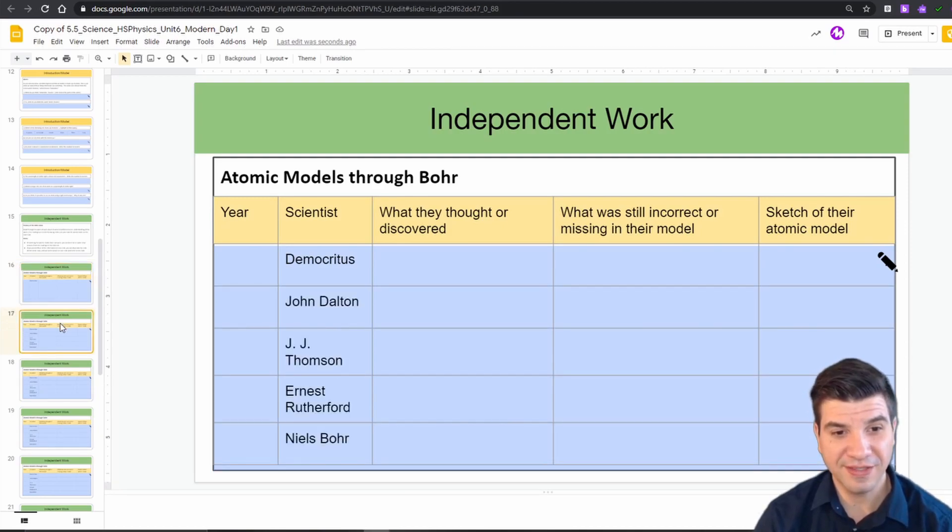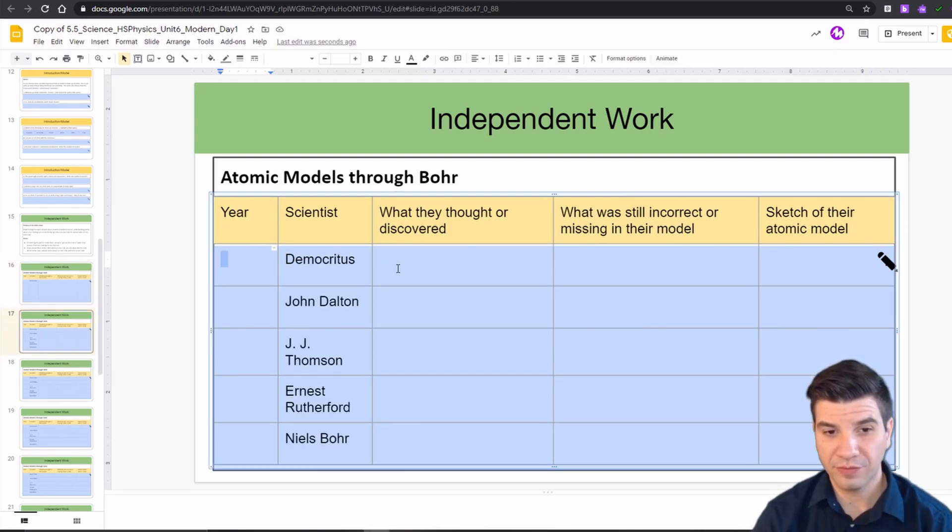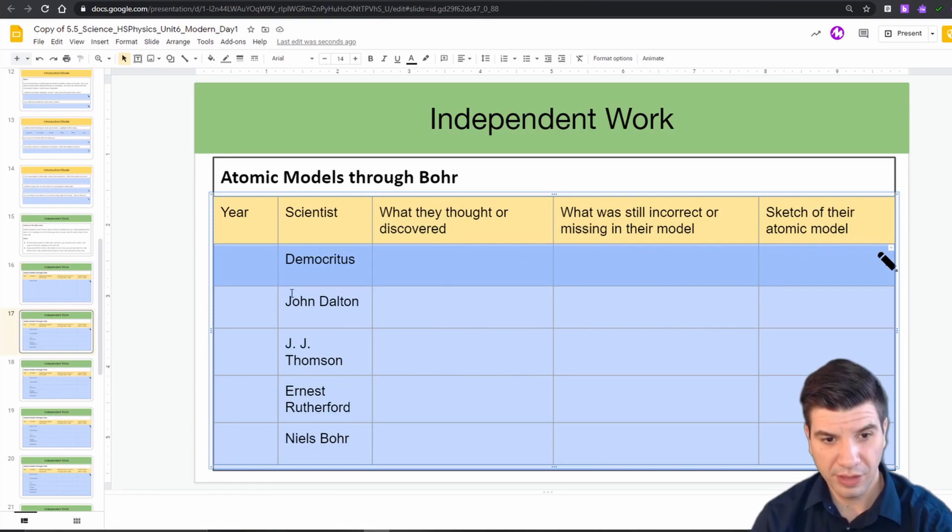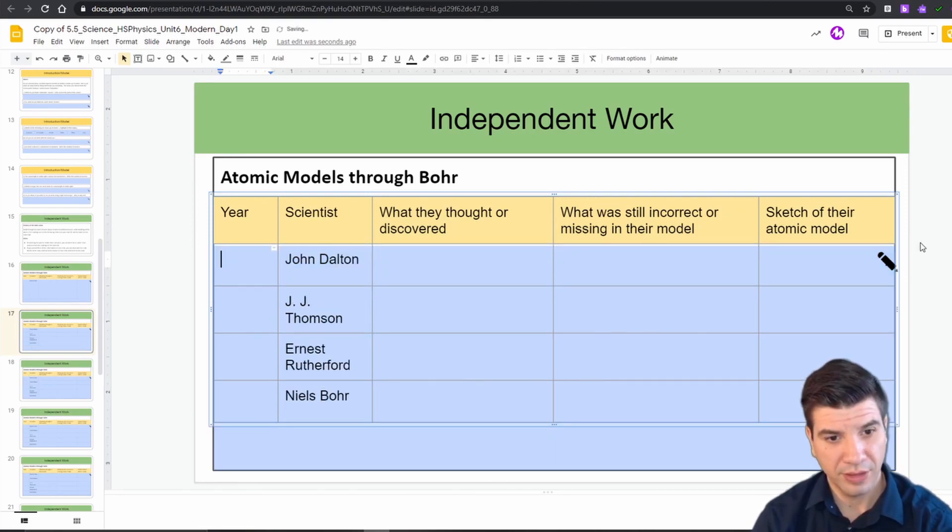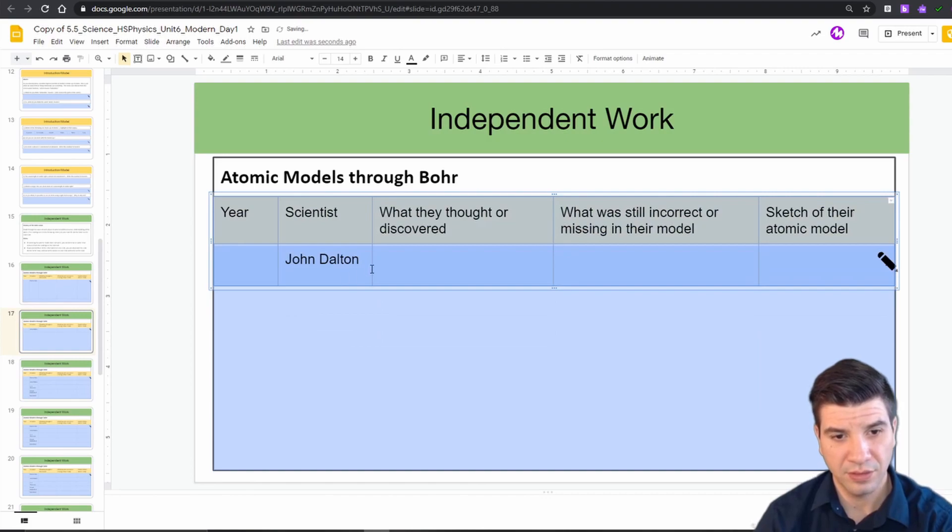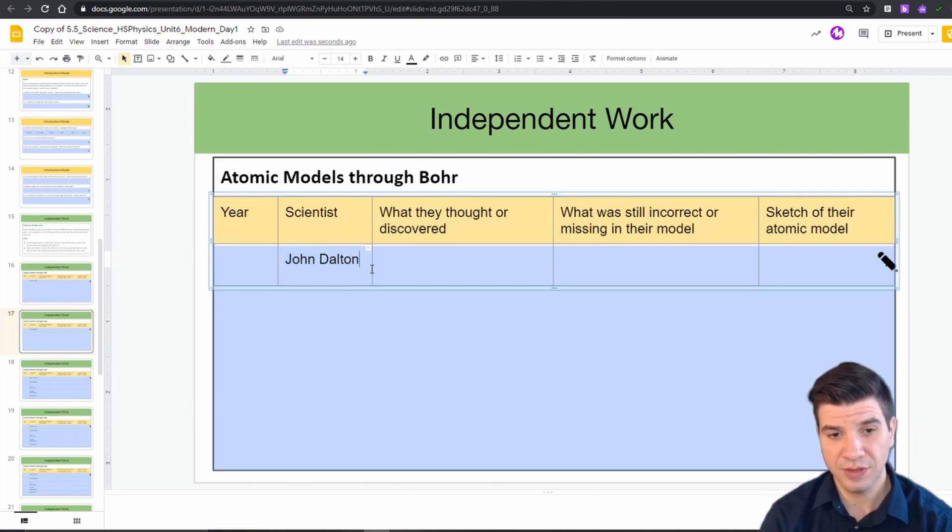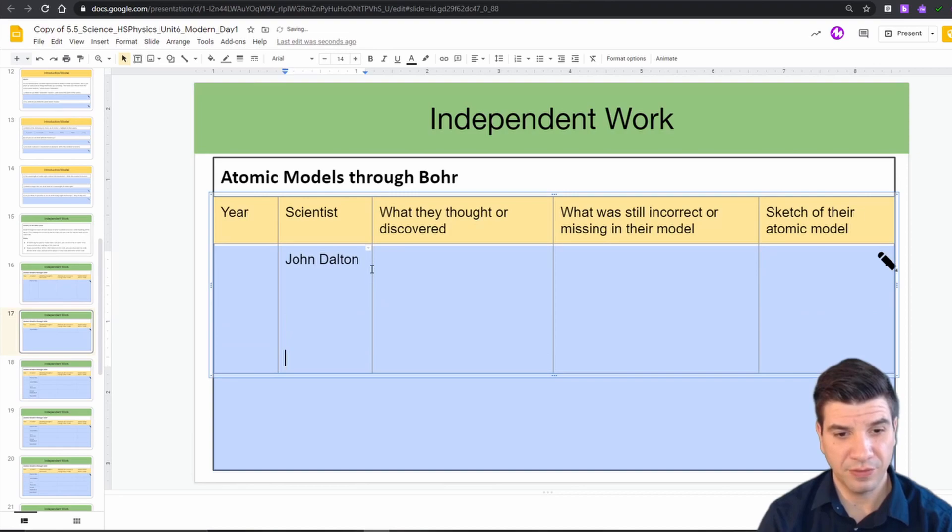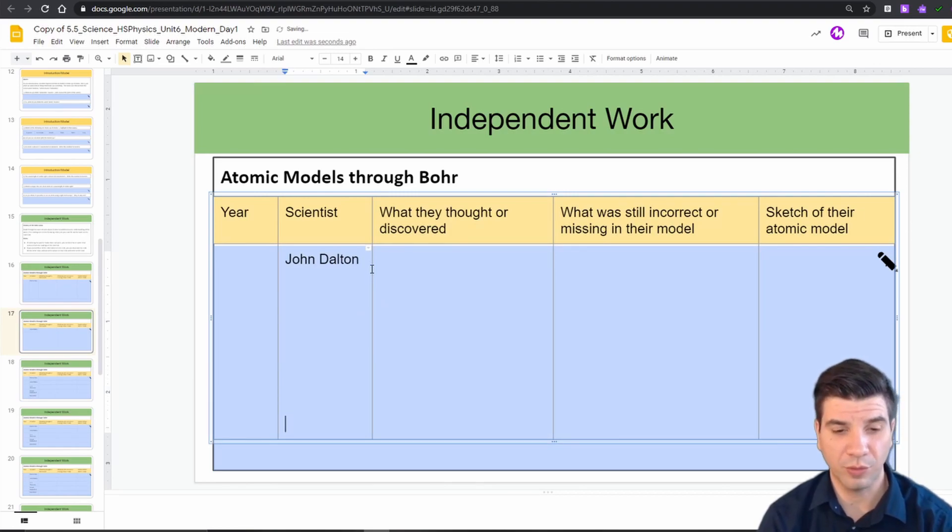Now let's do the same thing for the second slide. So here we want to get rid of Democritus. So highlight that row, hit delete, and you notice that everything slid up. And then just like before, highlight the following three after John Dalton. Then select any one of the columns you choose and tap enter a few times to give you some room to work in.